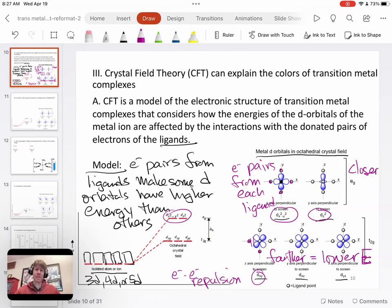Electron-electron repulsion is something we've seen before. Electron-electron repulsion is what makes each of the shapes, say tetrahedral or trigonal planar or all of the electron geometries. The electrons are trying to get as far apart from each other as possible. And that's what we're seeing here due to electron-electron repulsion.